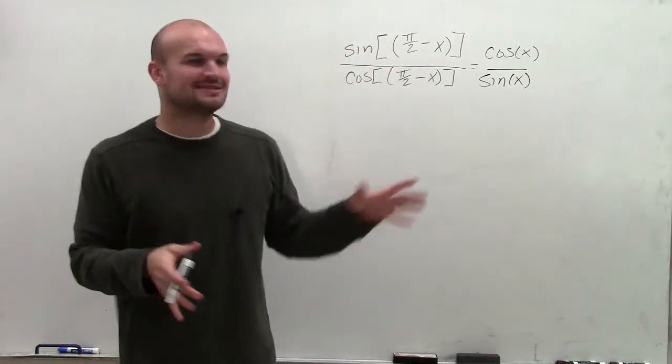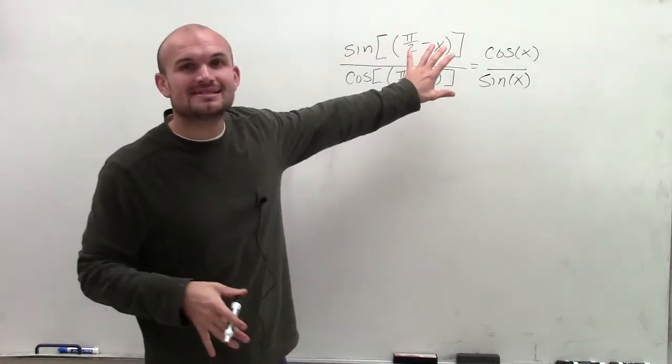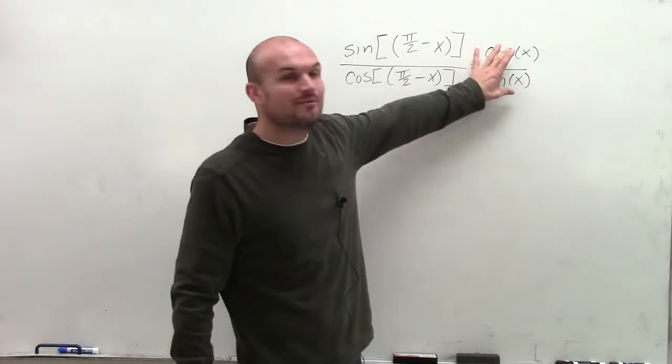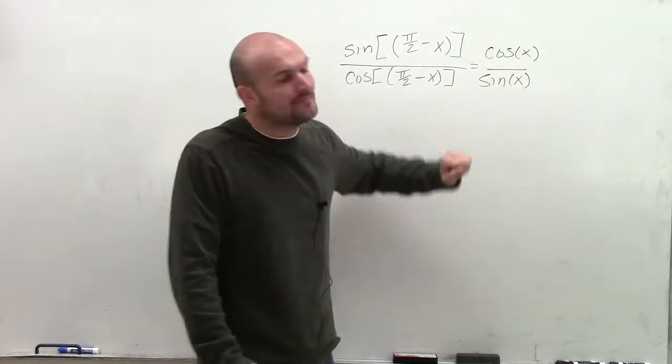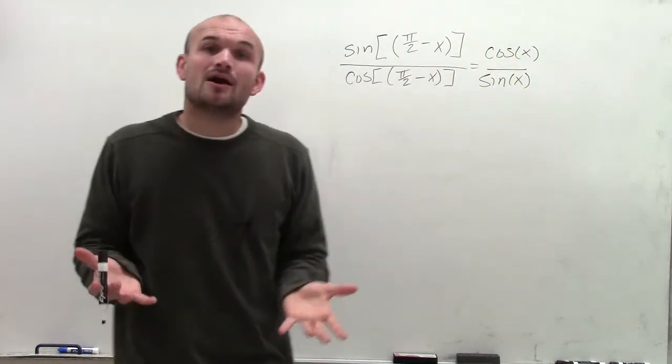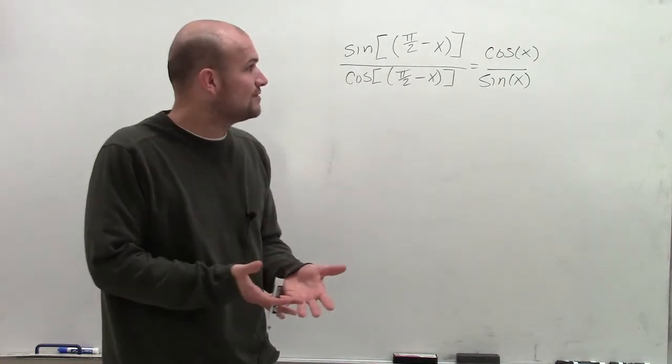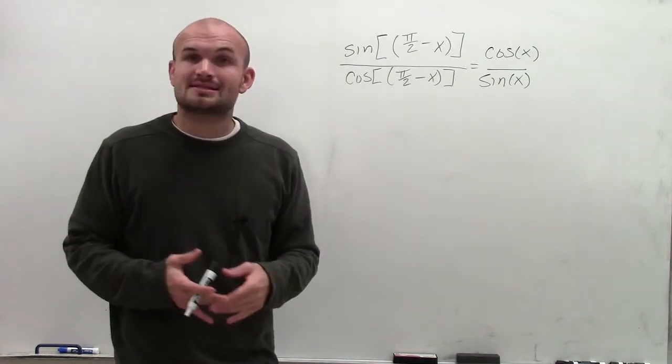So we can take all this complicated co-function identity reasoning and re-represent them with simpler trigonometric functions. Now, let's see, can I rewrite cosine of x divided by sine of x?